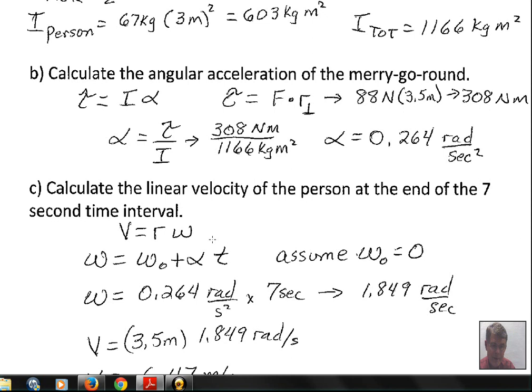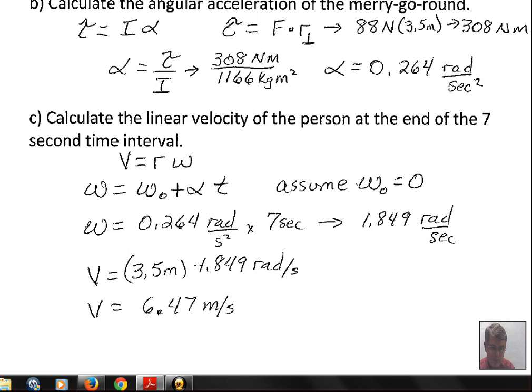In this particular situation, we're asked to find the linear velocity V in meters per second. There's a relationship between V and omega: V = r·ω. We have enough information to calculate omega. We assume we started from rest, so ω₀ = 0. We found alpha = 0.264 rad/s². We're asked to do this at the end of the 7 second time interval, so ω = 0.264 rad/s² × 7 sec = 1.849 rad/s. For linear velocity, we multiply by the radius.